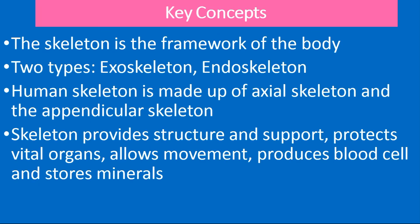In this lesson, we defined the skeleton as the framework of the body. There are two types of skeleton: the exoskeleton which is located on the outside of the organism, and the endoskeleton which is located on the inside. The human skeleton is made up of the axial skeleton and the appendicular skeleton. The skeleton provides a range of functions which include structure and support, protection of vital organs, movement, production of blood cells, and storage of minerals.